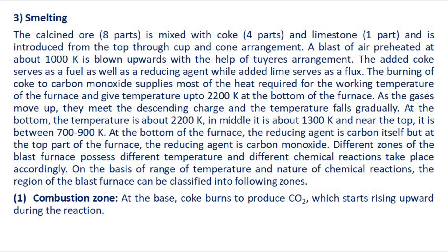As the gases move up, they meet the descending charge and the temperature falls gradually. At the bottom, the temperature is about 2200 Kelvin; in the middle it is about 1300 Kelvin and near the top it is between 700 to 900 Kelvin. At the bottom of the furnace, the reducing agent is carbon itself, but at the top part of the furnace, the reducing agent is carbon monoxide. Different zones of the blast furnace possess different temperatures and different chemical reactions take place accordingly. On the basis of range of temperature and nature of chemical reactions, the region of the blast furnace can be classified into the following zones.